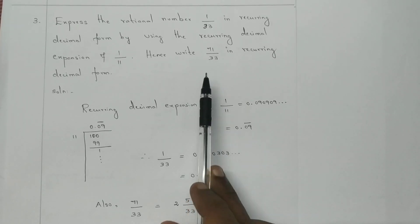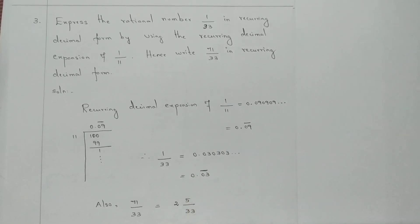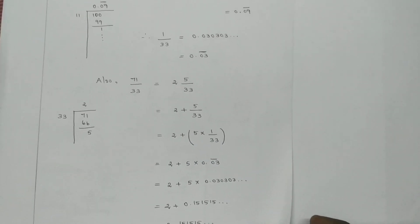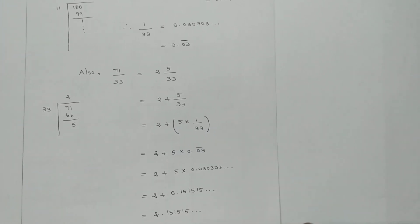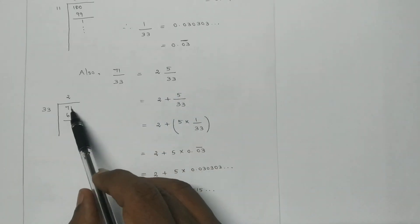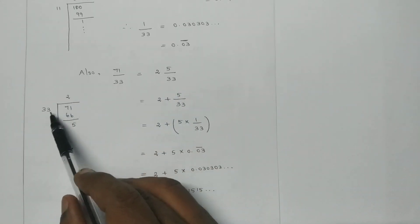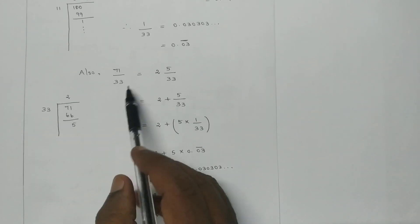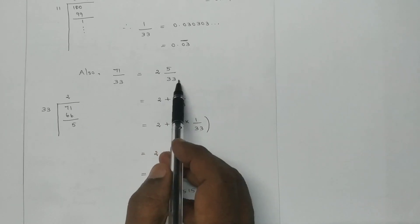What is 71/33? 71 divided by 33. I divide: 2 times 33 is 66, with balance 5. Now it will be a mixed fraction: 2 and 5/33.